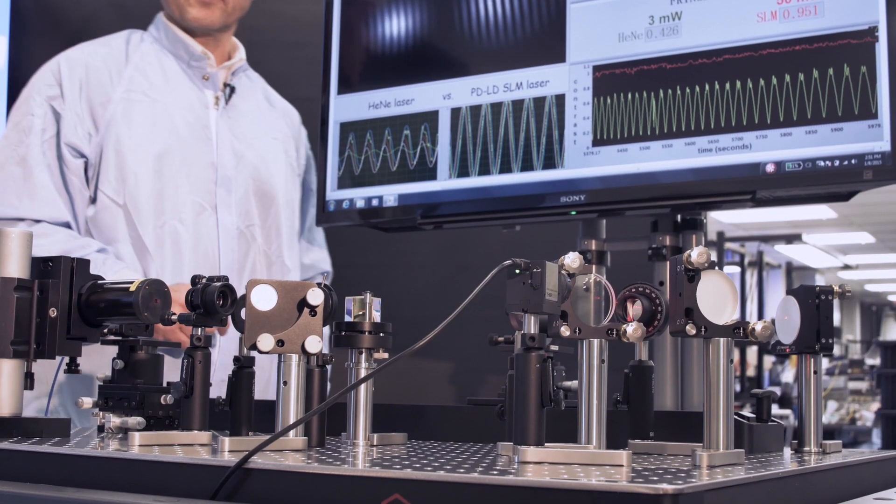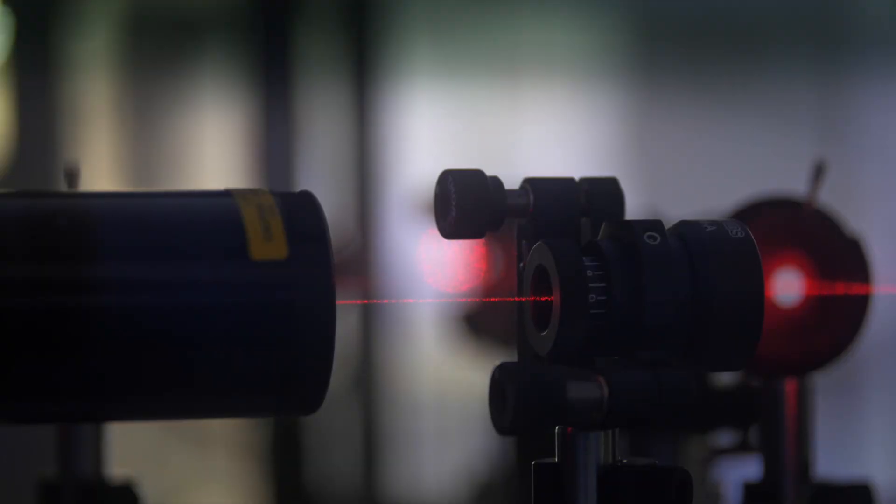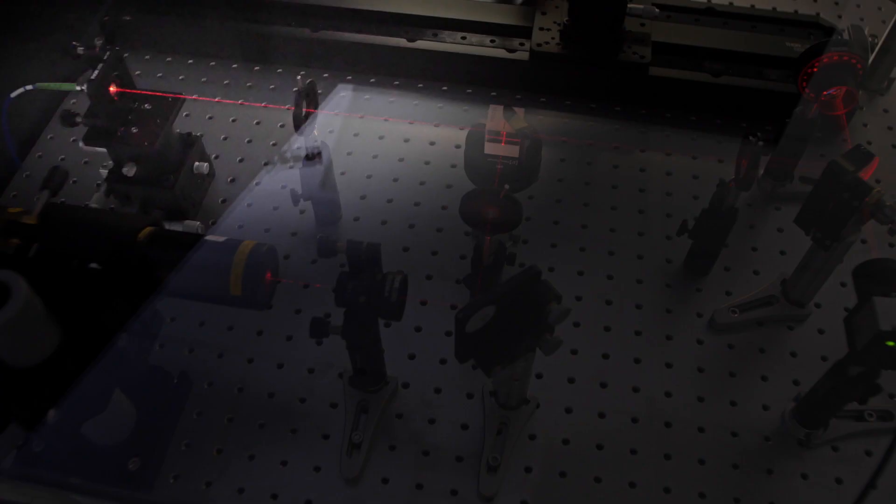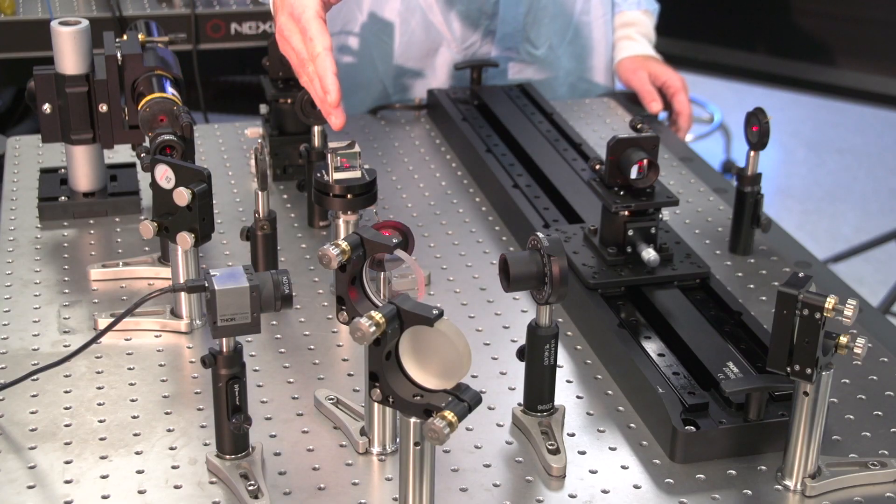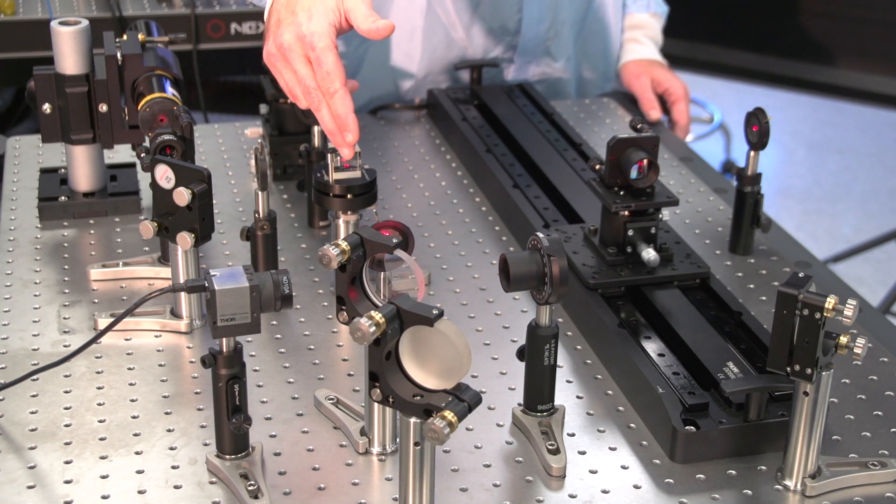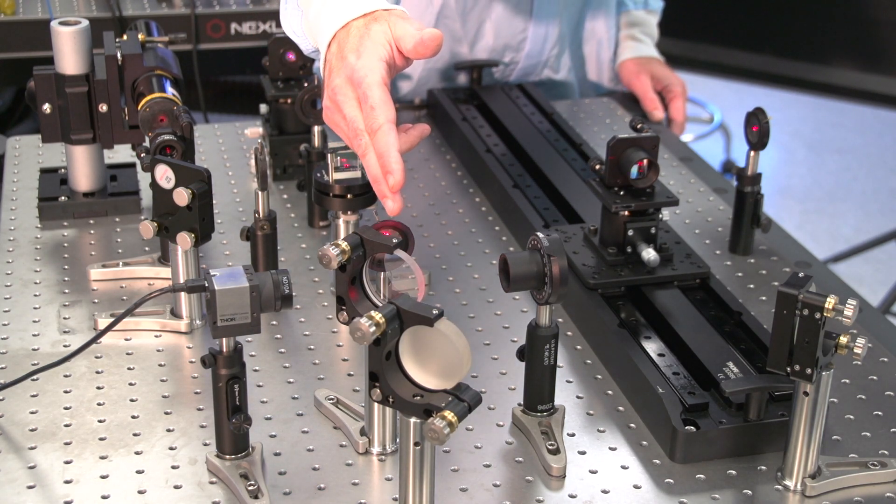The outputs of the two lasers, the helium-neon laser and the SLM series laser diode fed here by optical fiber, are mixed here on this beam splitter and then they travel the common path to the first beam splitter here.